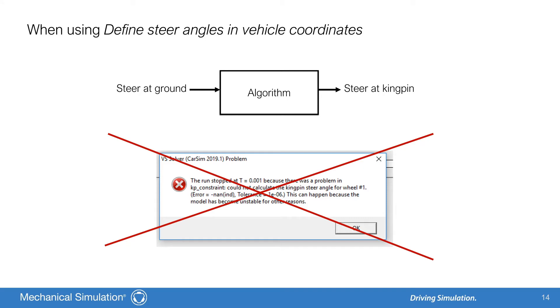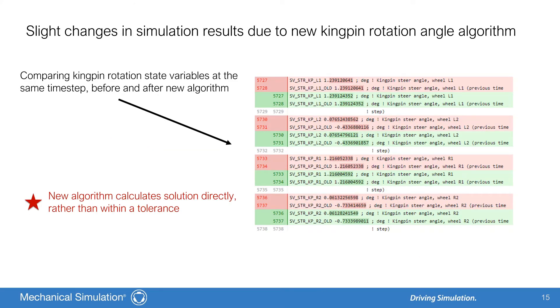This calculation was replaced beginning in version 2021.0 with a more efficient version that does not rely on iteration. Consequently, the model will no longer fail during the run with the error message, there was a problem in KP constraint, could not calculate the kingpin steer angle. Error handling for the new calculation method occurs at initialization by checking the total inclination of the kingpin axis with respect to vertical and making sure it does not exceed 45 degrees. The new calculation method produces slight differences in simulation results, but these are attributable to the accuracy of the new calculation compared to the previous iterative calculation, which would produce results only as accurate as its solution tolerance allowed.